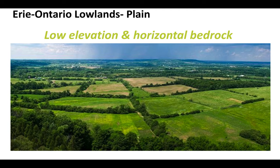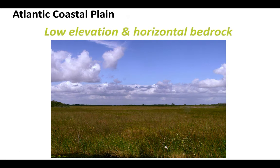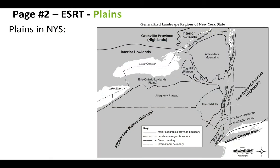An example of plains in our state is the Erie-Ontario Lowlands — very low elevation, horizontal flat bedrock. Similarly, Long Island is part of the Atlantic Coastal Plain — again, low elevation and horizontal bedrock. Now going to page two of the reference table, let's look at some of the plains within our entire state.